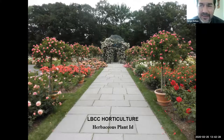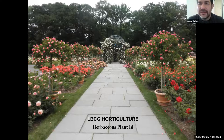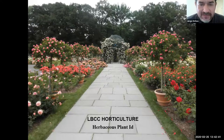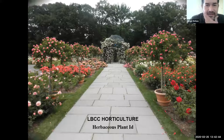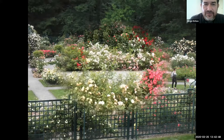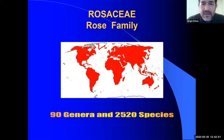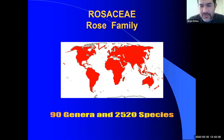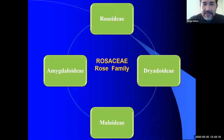Roses are one of the world's most important plants, cultivated by many people for many years. Here on the screen is a photograph I took of the Rockefeller rose garden in New York. The Rosaceae — the rose family — is spread throughout the world with 90 genera and around 2,500-2,520 species, so we'll focus only on the most important ones.